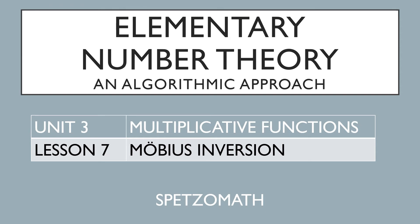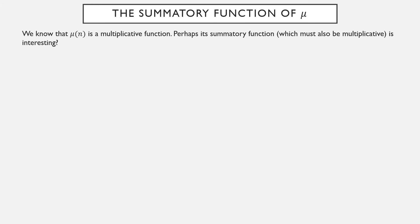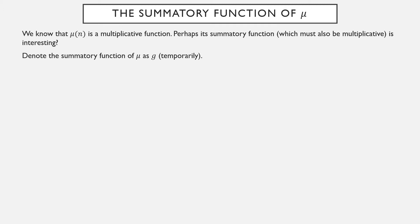We're going to introduce something called the Möbius inversion formula, which arises quite naturally from work we've already done. We begin by taking a look at the Möbius function µ. We know it is a multiplicative function. Since the summatory function of a multiplicative function is multiplicative, the summatory function of µ will also be multiplicative. We're going to see that the summatory function of µ is a function we've already seen.